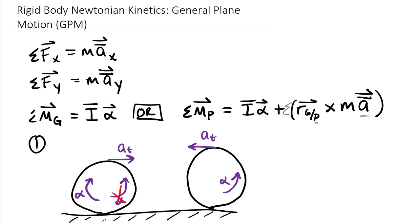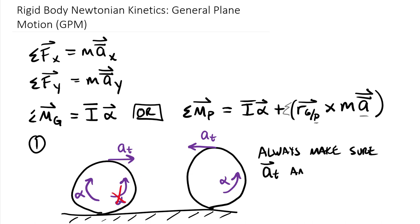To put this into words: always make sure our tangential acceleration vectors and our alpha vectors agree with each other.